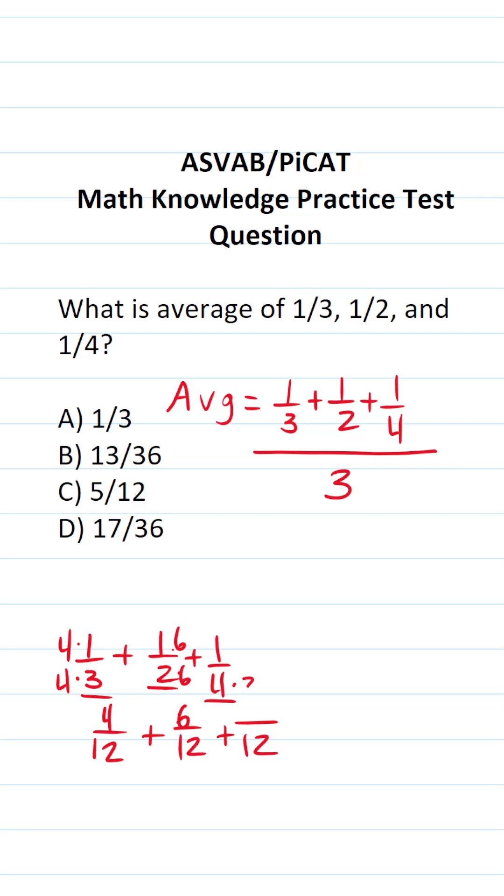To write four as twelve we're going to multiply it by three. We also have to do that to its numerator. Four times three is twelve. One times three is three.